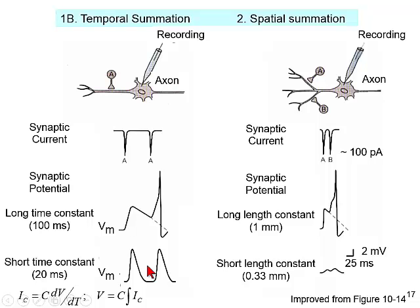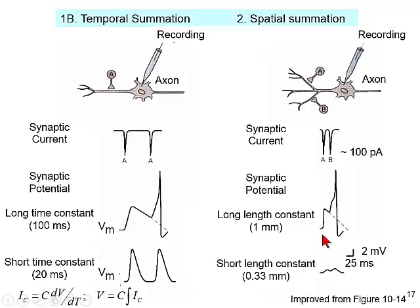For spatial summation, if we have a synaptic current at point A and at point B, there is a possibility they can sum in the soma if the length constant of the cable is long enough. Typically in a neuron, the length constant is on the order of a millimeter. A short length constant does not allow inputs to sum; a long length constant does.